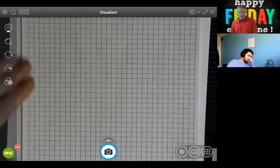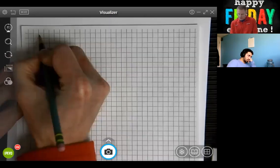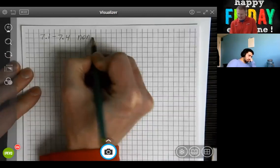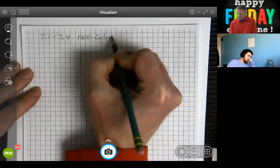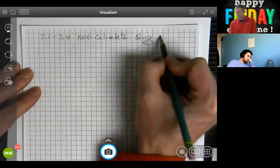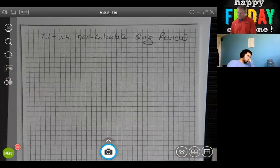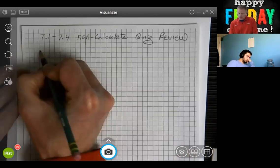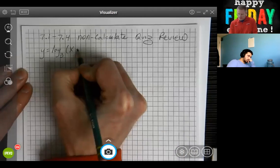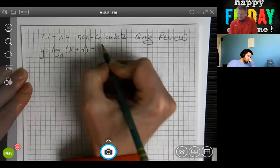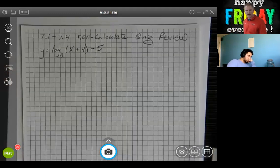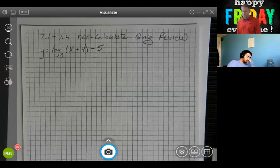We're going to go over a short review on the 7.1 to 7.4 non-calculator quiz. The first thing we want to look at is how would we graph something that would look like that?